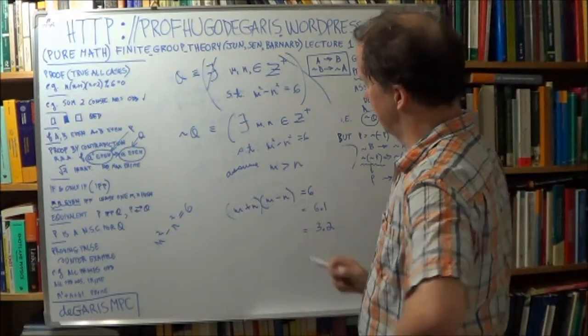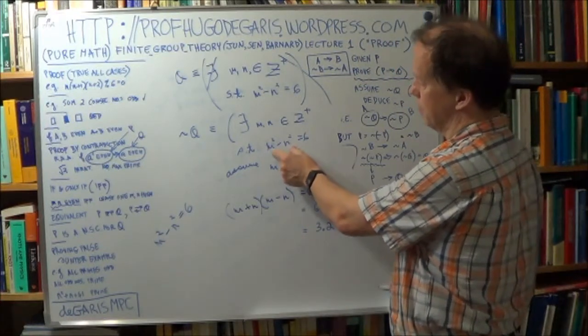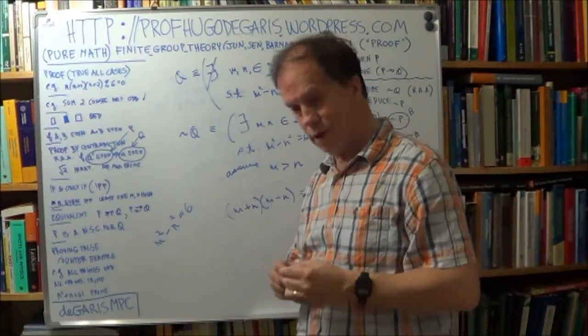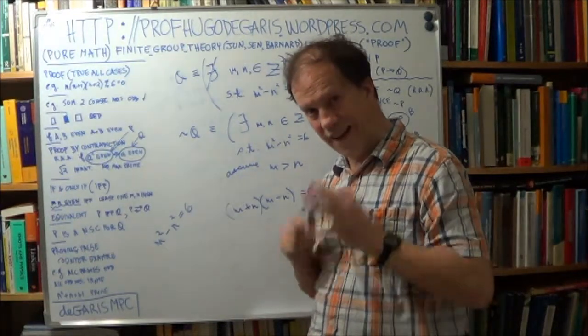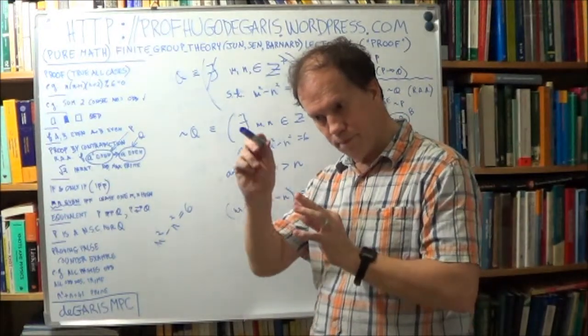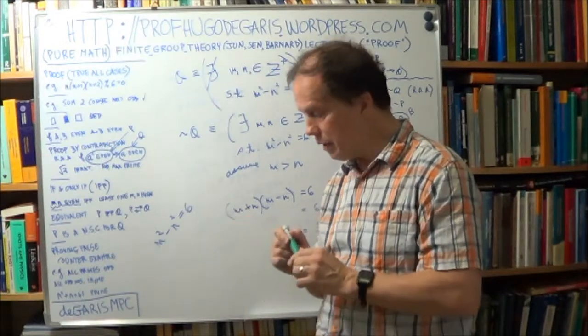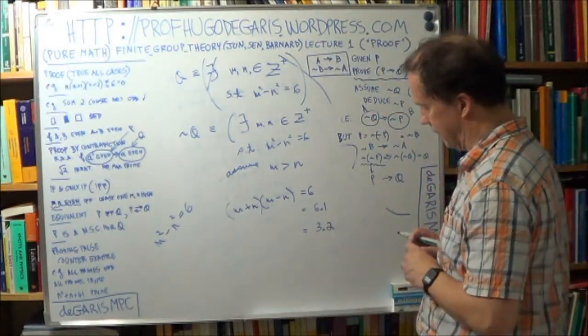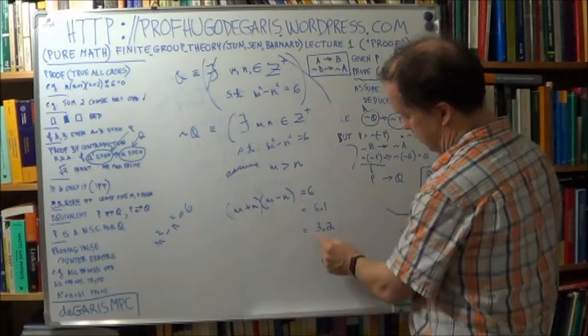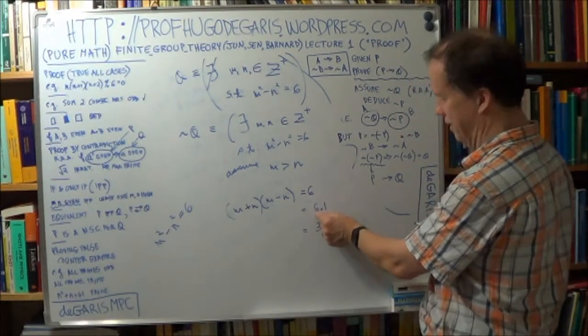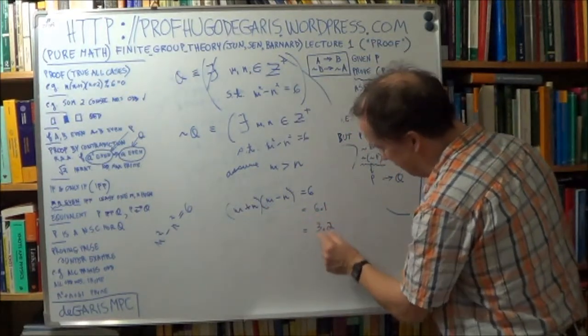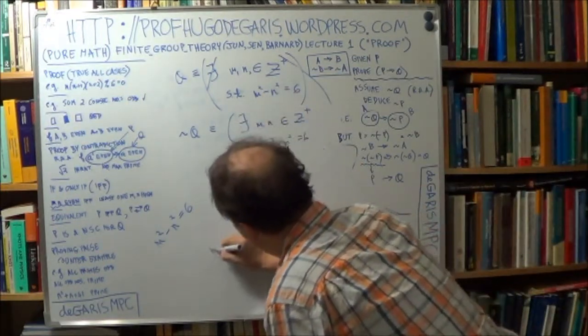And these are integers, m and n are integers, so m squared minus n squared is also an integer. So the right-hand side is 6, that's an integer. And remember the famous theorem, the fundamental theorem of arithmetic: every integer can be factorized uniquely as a product of the powers of primes. So this is equal to that, so that is either equal to 6 times 1 or 3 times 2.